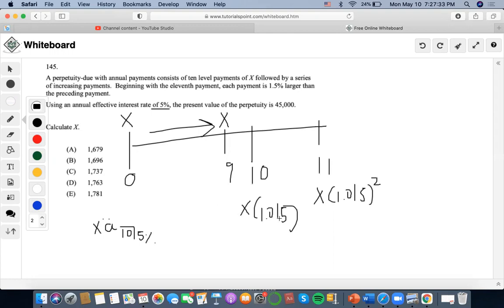Now for this one, this one is an increasing perpetuity, which means that to find this present value of this geometric increase, we're going to use first term over 1 minus common ratio.